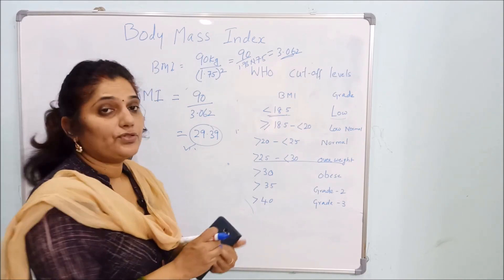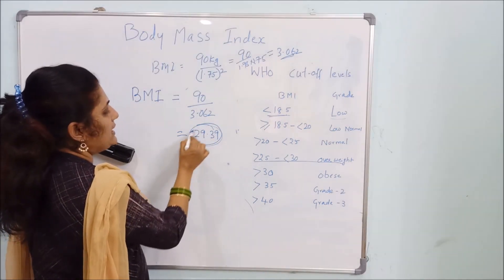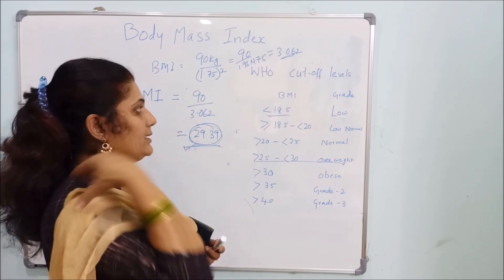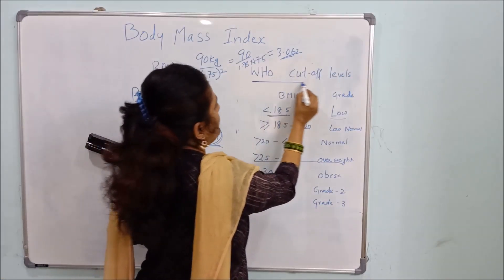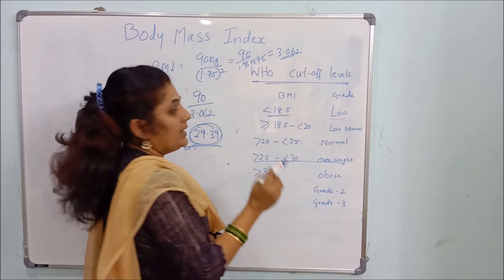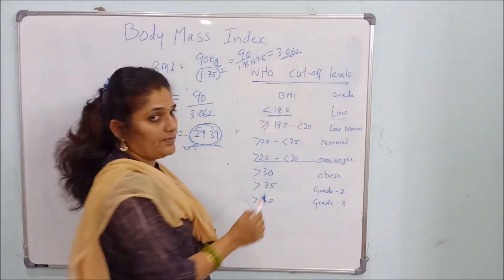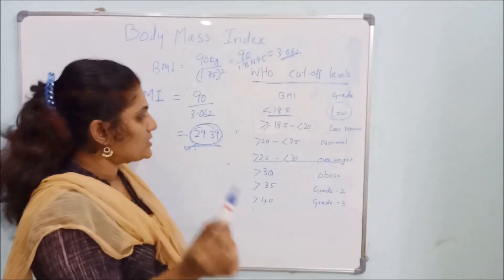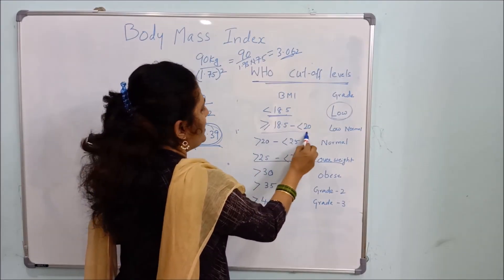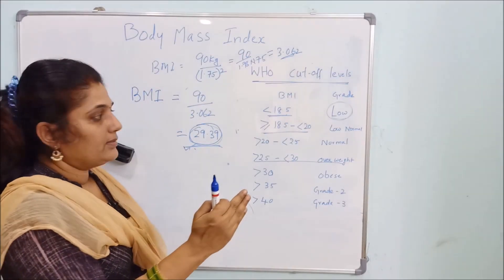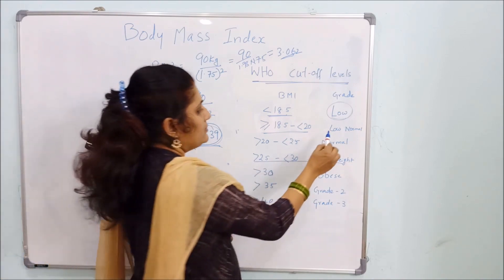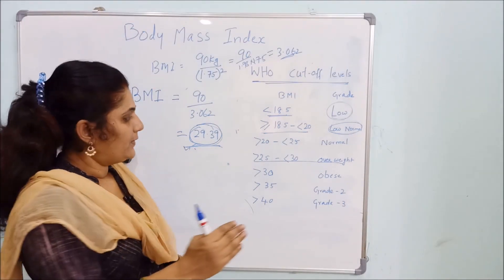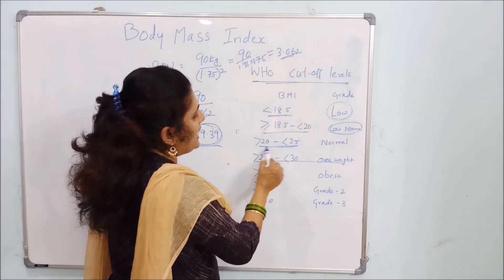Now we need to see whether this person is obese, overweight, or normal based on this calculation. According to WHO — World Health Organization — cutoff values, if your BMI is less than 18.5, you are underweight. If your BMI is between 18.5 and 20, you are low normal.